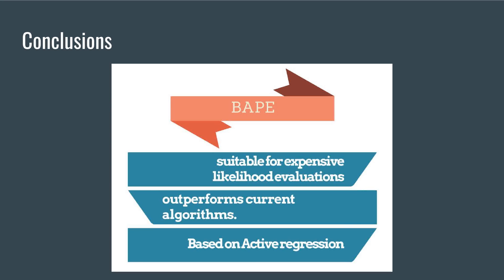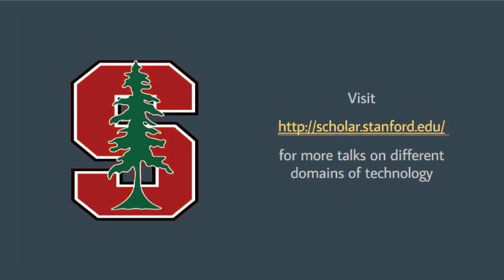The framework is for expensive black box likelihood evaluations. The methods outperform the algorithms currently in use. When likelihood evaluations are expensive, treating posterior estimation in an active regression framework enables us to be significantly query efficient. Thank you for listening to Stanford Scholar Initiatives Research Talk. Make sure to visit www.scholar.stanford.edu for more talks on different domains of technology.